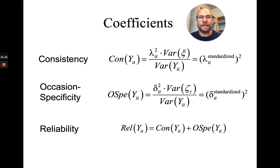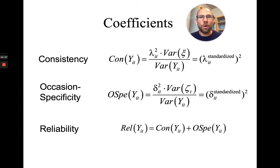Again, this model reduces to a classical test theory model when the state residual effects are zero. When there's no variance in the state residual factors, they drop from the model and you have a single trait model — the same as a congeneric model of classical test theory. Classical test theory can therefore be seen as a special case of latent state trait theory where you have no effects of situations or person-situation interactions, which may be appropriate for constructs like intelligence or other very stable personality constructs.